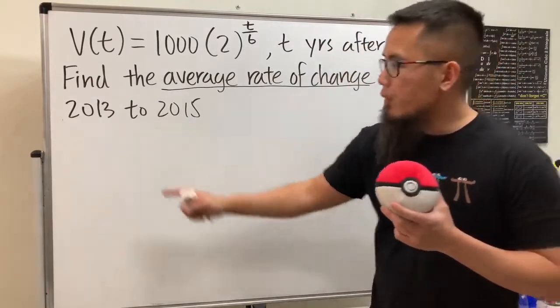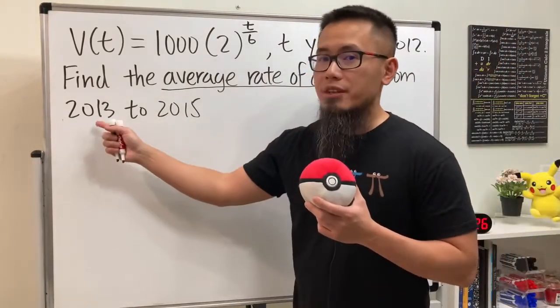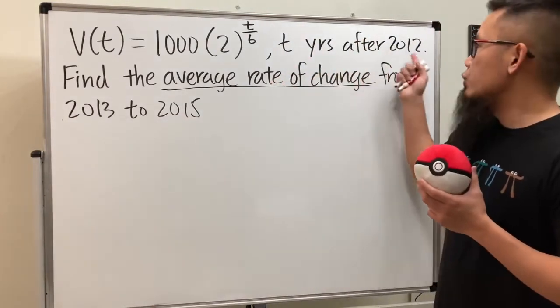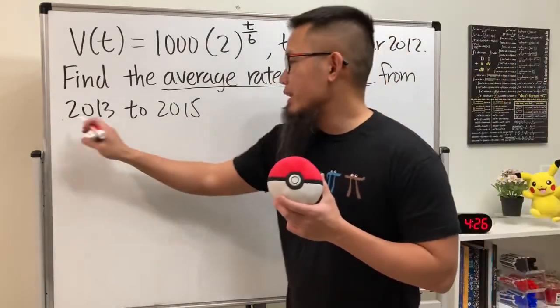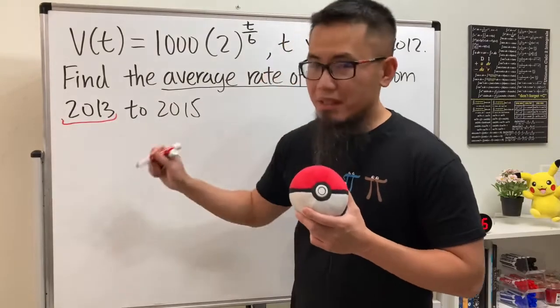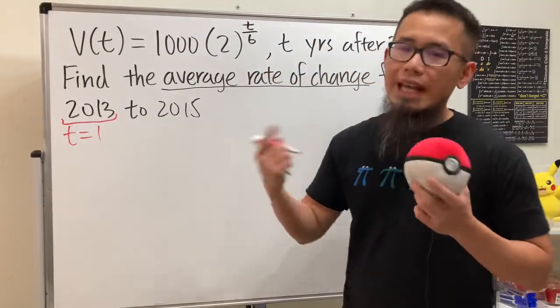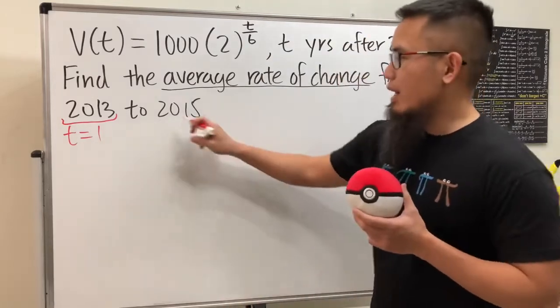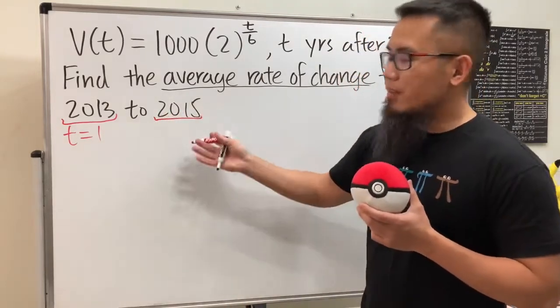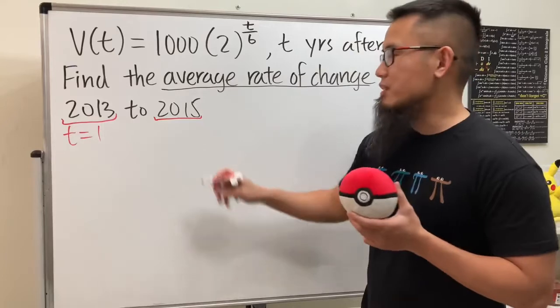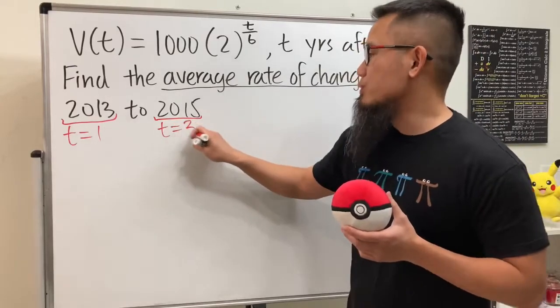Well, we are not going to say t equals 2013 because t is the number of years after 2012. So in fact here means t equals 1 because 2013 is 1 year after 2012. Likewise, 2015 is 3 years after 2012, so here t equals 3.